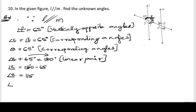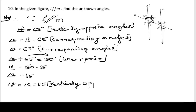Angle G is exactly opposite to angle E, and we know that angle E is 115 degrees. By vertically opposite angles, angle G equals 115 degrees.